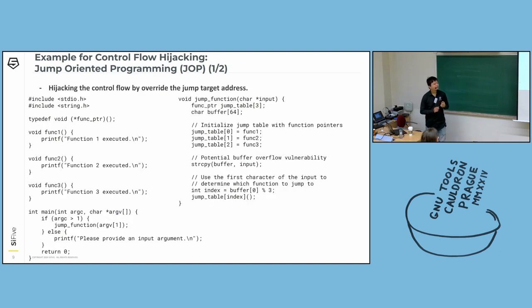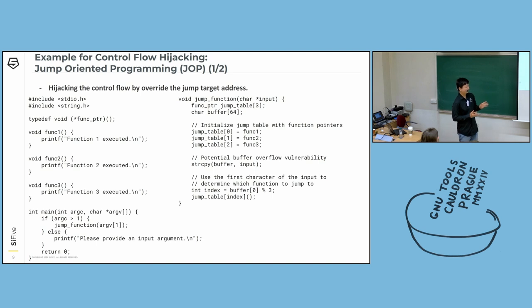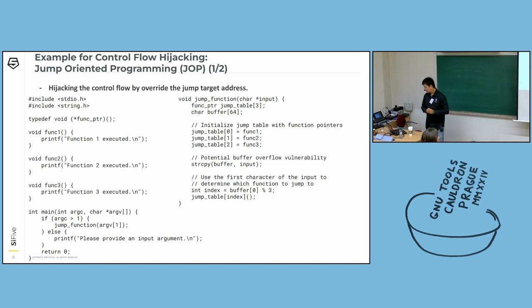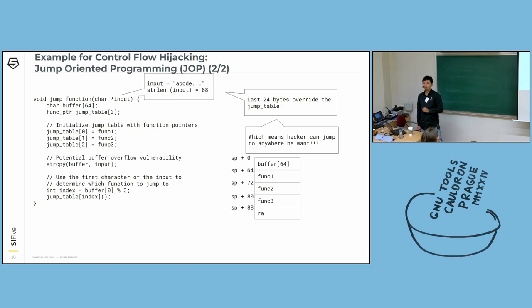The next one is jump-oriented programming, JOP. It's similar to the last one but slightly different — it contains a small jump table in the stack, and of course it's placed there intentionally for overwriting. Since it's put in the stack, you can do a similar thing: put a long enough string to override the jump table. Again, a hacker can jump to anywhere he wants.